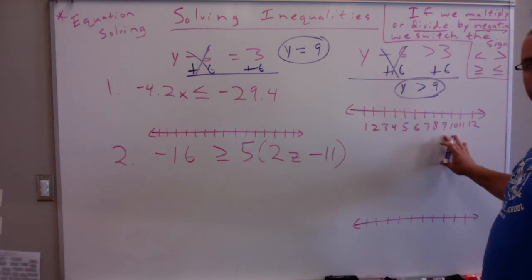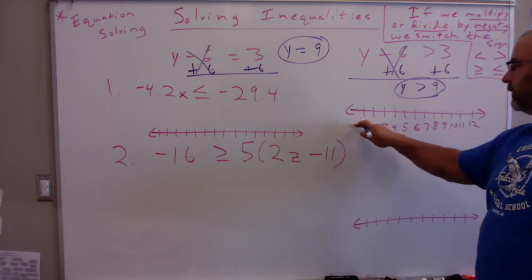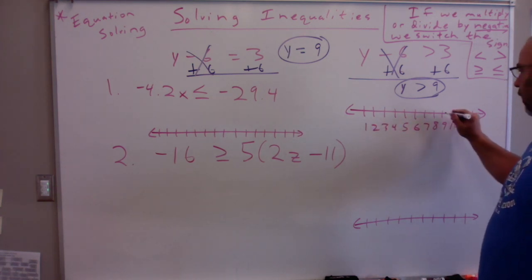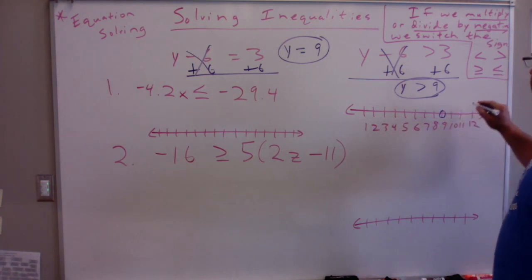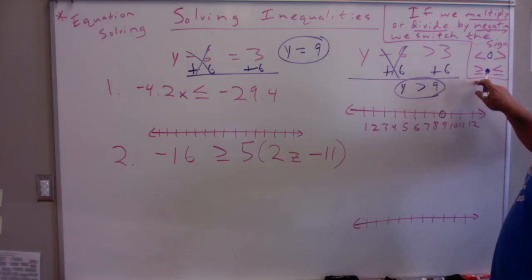Now, how would we go ahead and graph this? So y is greater than 9. We're going to go over to 9, which is right here. We're going to do an open circle. We do an open circle if it's less than or greater than. We do a closed circle if it's equal to, greater than or equal, or less than or equal to.